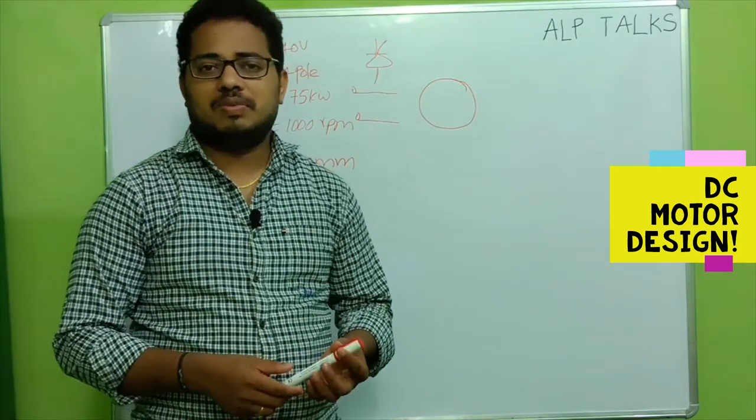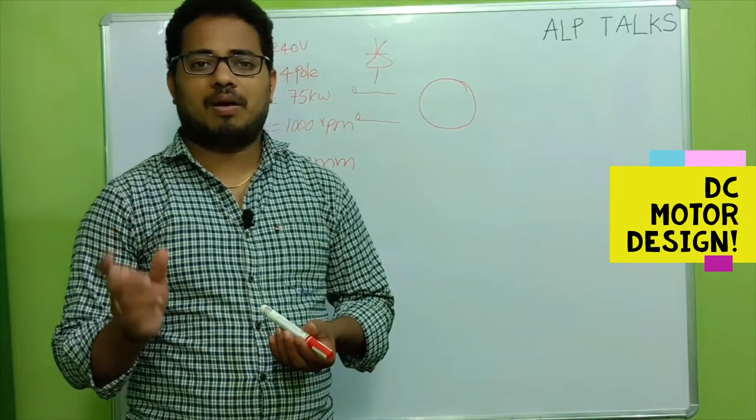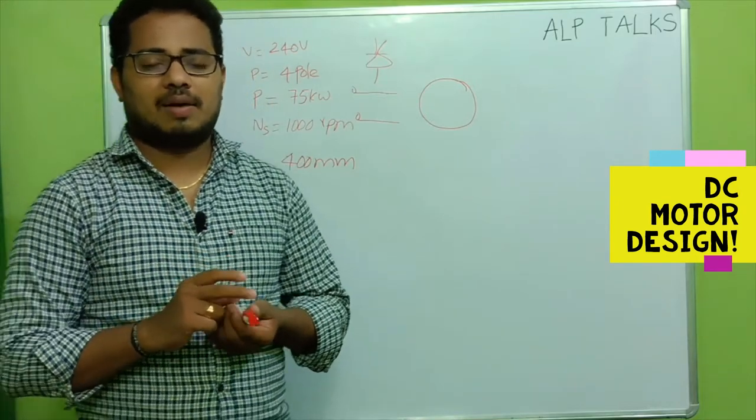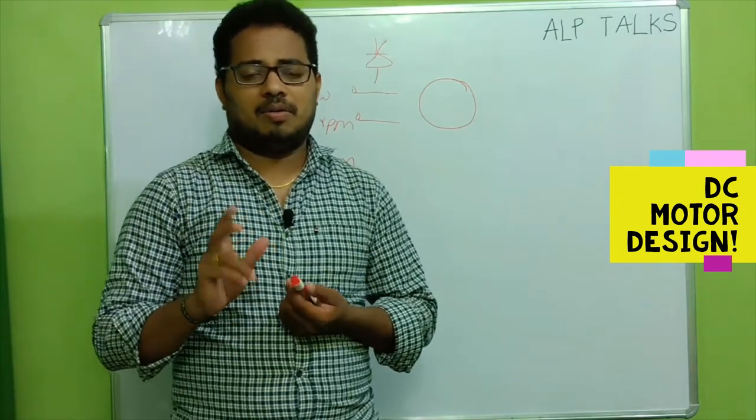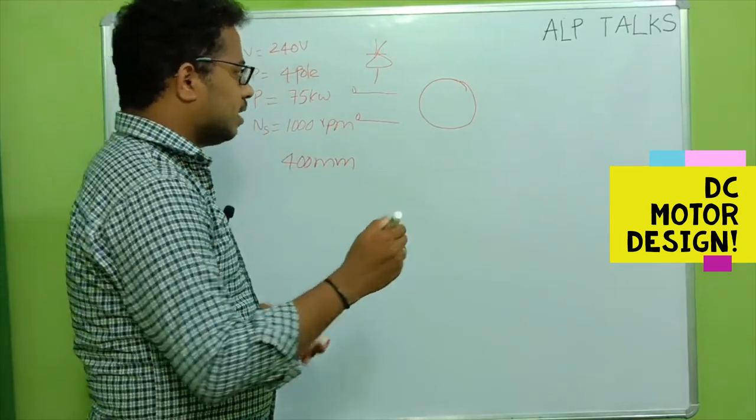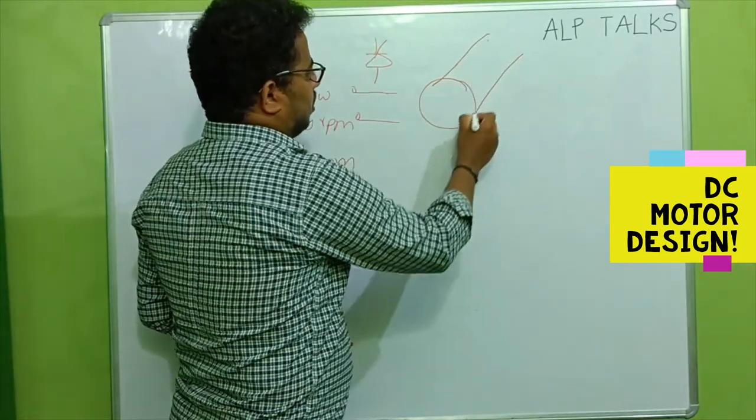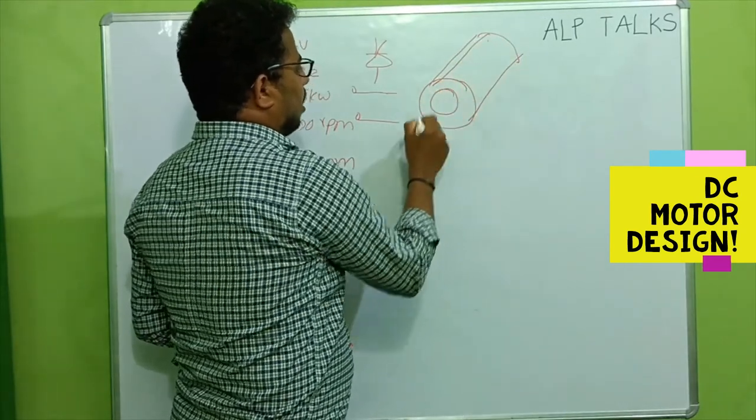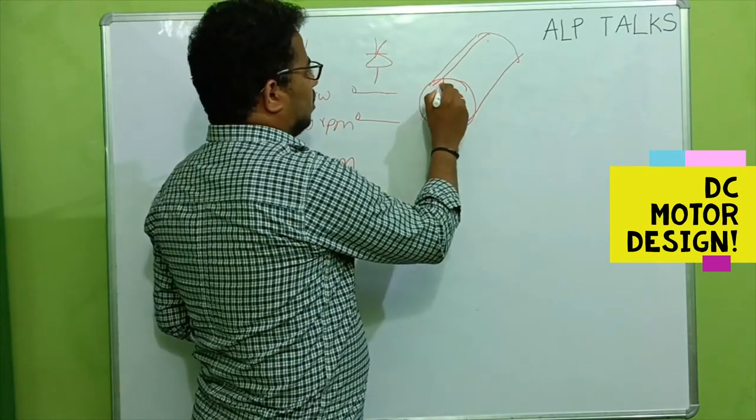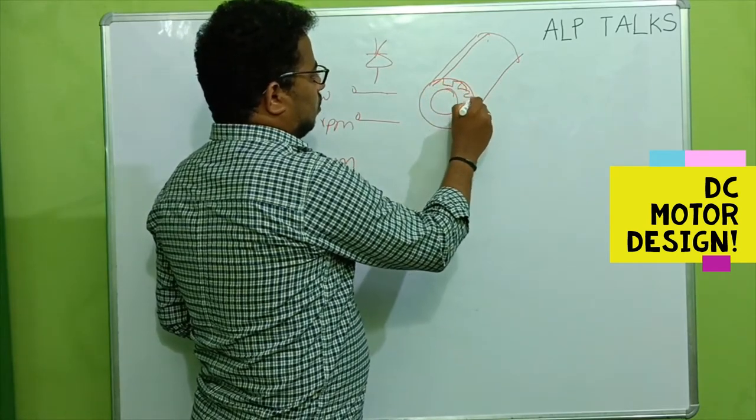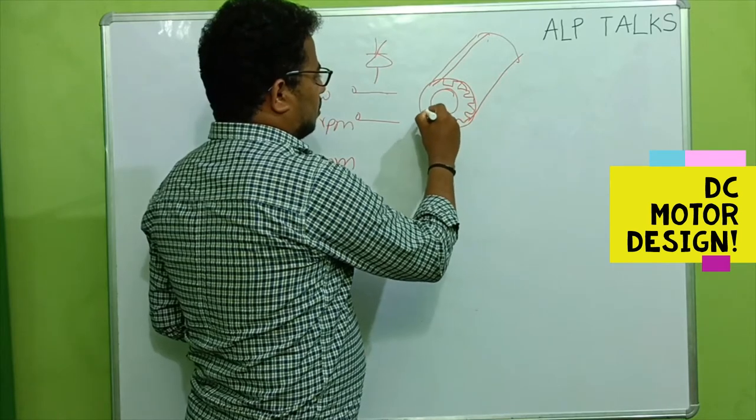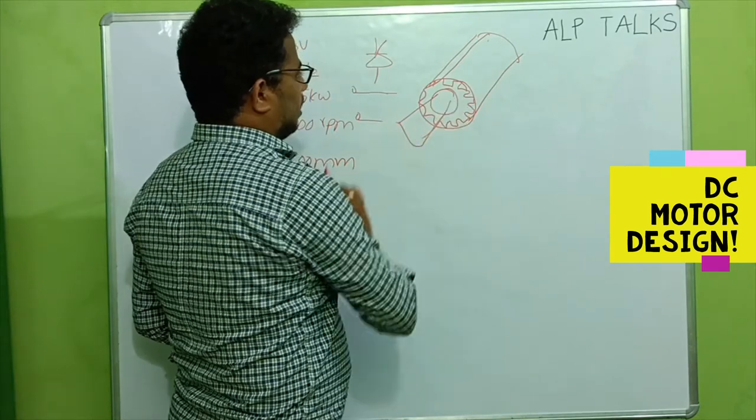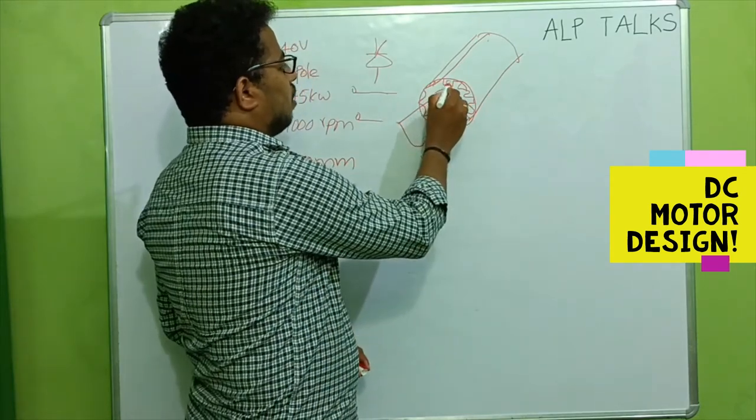There are different aspects. For example, this is the DC motor. I'm just trying to draw the isometric cube. This is the armature. Here you have number of slots. This is the shaft extension, and we have number of conductors here. This is the armature conductor.